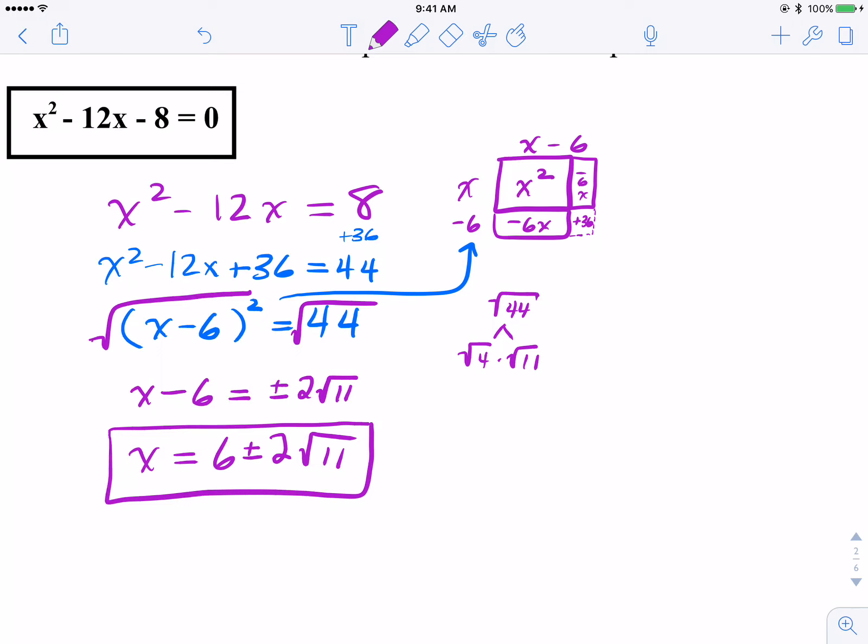So once again, walking through the steps, we rid the constant term, we find that missing magic number. If you'd like to do the algorithm, it's B over 2 squared, the visual certainly helps as well, of adding 36 to not just the left but the right as well, we then factor it as a binomial squared. Or if you draw that visual, just look at what your dimensions are, X minus 6 times X minus 6. At that point, use radicals or square roots to isolate X or to get rid of that square term, simplify radicals whenever you can. And that's it.